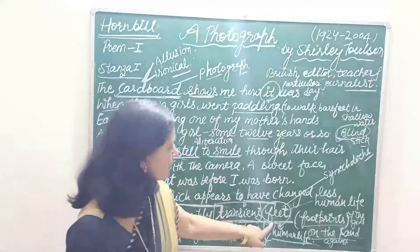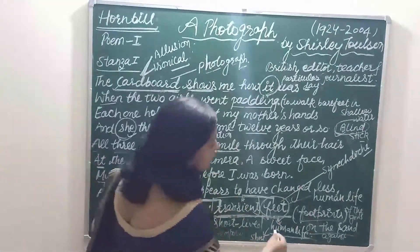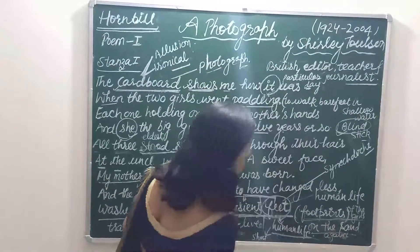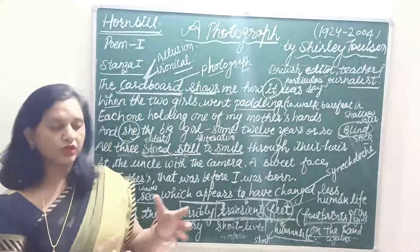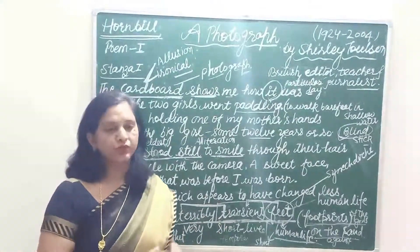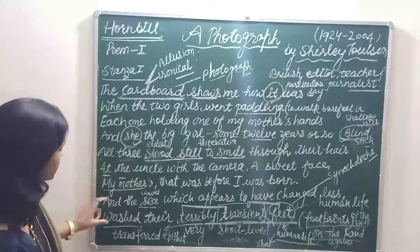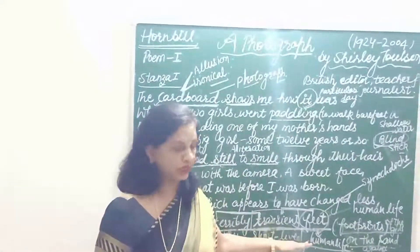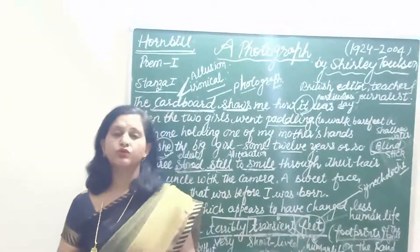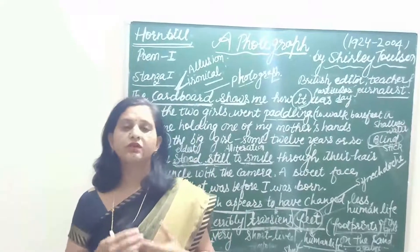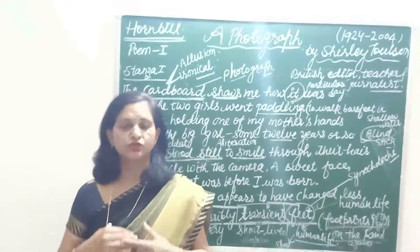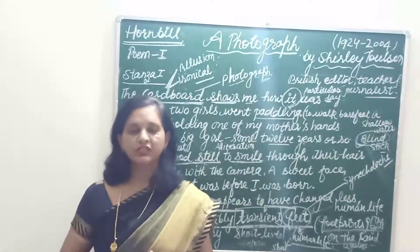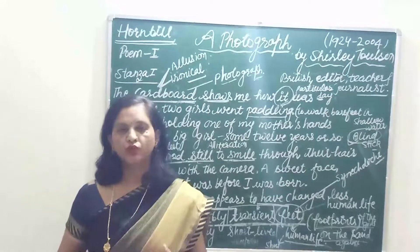'Wash their terribly transient feet' — here 'terribly' means greatly, and 'transient' means short-lived or temporary. 'Feet' here does not literally mean feet but footprints of the girls on the sand at the beach. The sea waves washed away those temporary footprints. The poet wants to highlight that human life is very short in contrast to nature — whoever is born is bound to die; nature is permanent but human life is not.